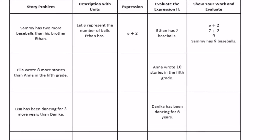The first example they did for us, I'm just going to skip to the next one. It says, Ella wrote eight more stories than Anna in the fifth grade. I notice over here they've given us Anna. I'm going to use Anna as my variable. I'm going to let A — A for Anna. You could pick anything; you don't have to pick A. I just picked A because it makes sense for Anna. Let A represent the number of stories that Anna wrote.